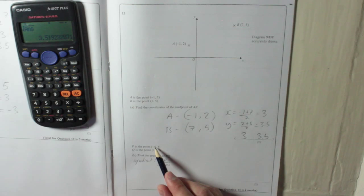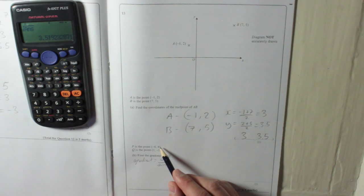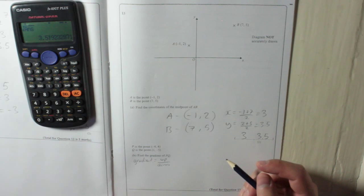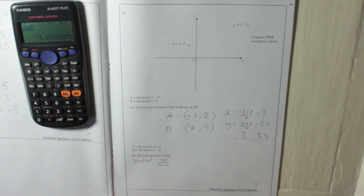So it goes from minus 4 up to 1. So how far across is that? That's 5. And here it goes from 4 and it's actually going down to minus 5. So how far is that? It's minus 9, isn't it? That's how far it's going down.